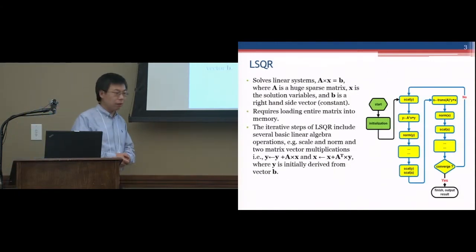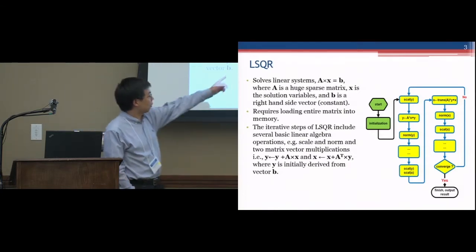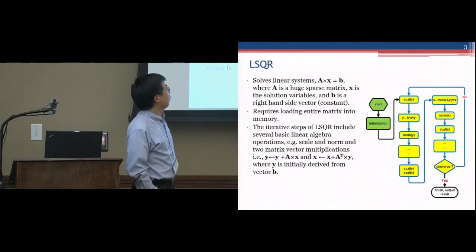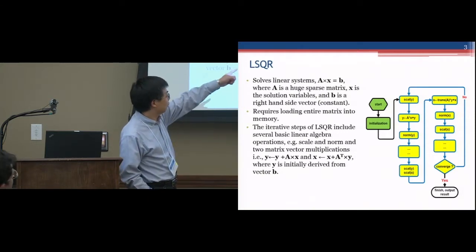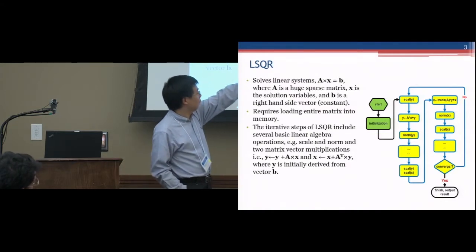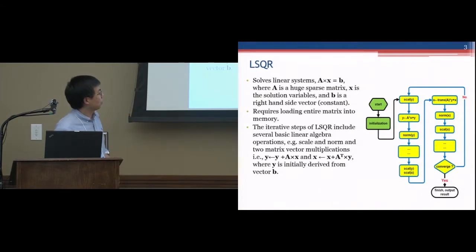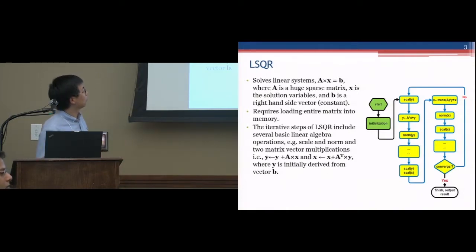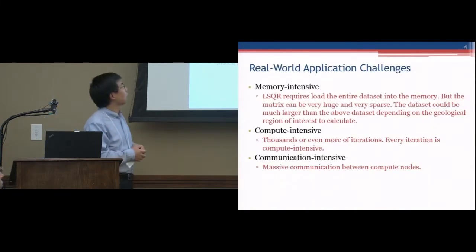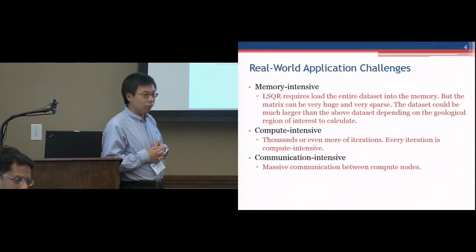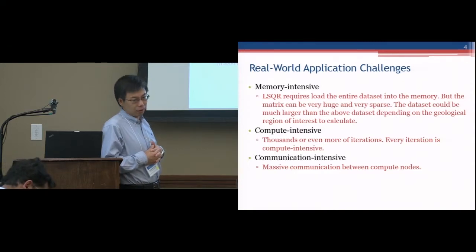In the LSQR algorithm, there is mainly an iteration in the middle. It involves two major computations: matrix multiplied by vector plus vector y, and the other one is the transpose of the matrix multiplied by a vector. In real world application, it's very memory intensive, compute intensive, and communication intensive.